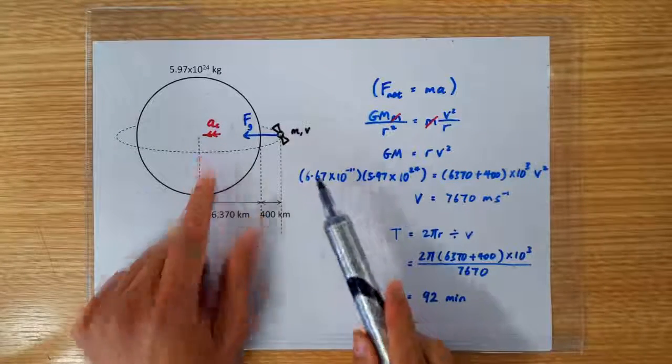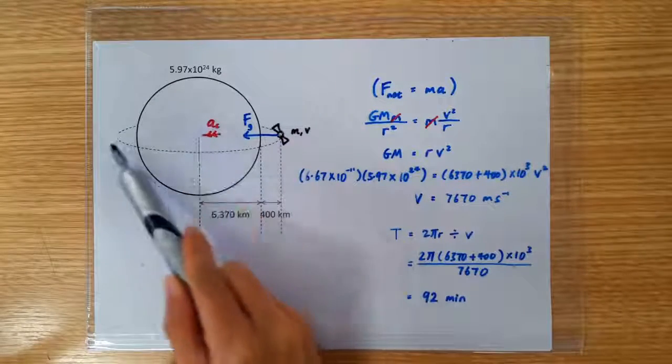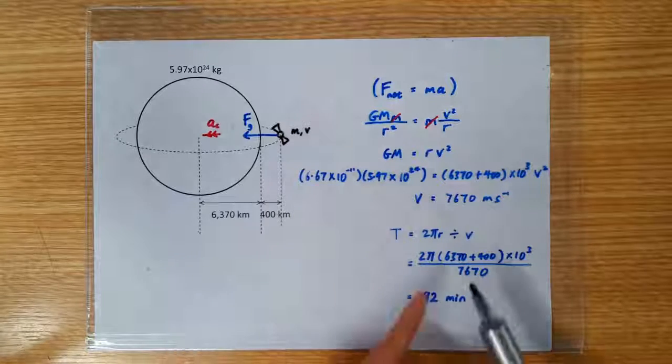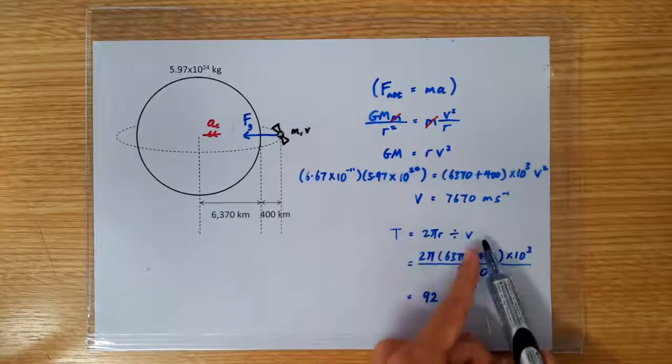We can calculate the amount of time it takes for the satellite to complete one orbit by simply doing distance divided by speed.